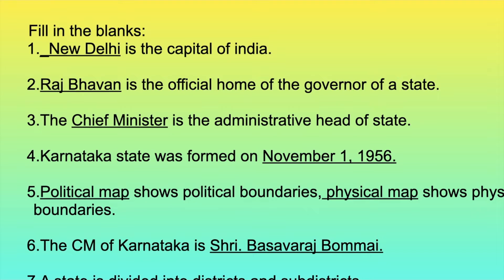Fill in the blanks. New Delhi is the capital of India. Raj Bhavan is the official home of the governor of a state. The chief minister is the administrative head of state. Karnataka state was formed on November 1, 1956. A political map shows political boundaries. A physical map shows physical boundaries.